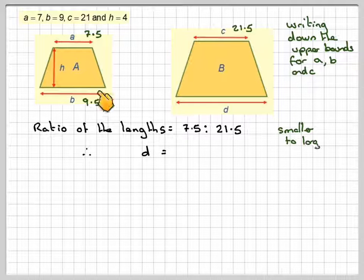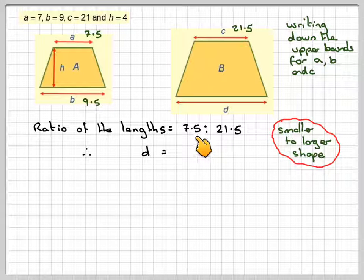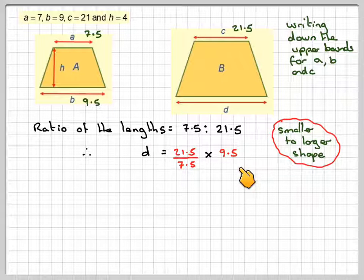So d, we're going from the smaller one to the larger one, so we need to multiply by 21.5 divided by 7.5, times 9.5.